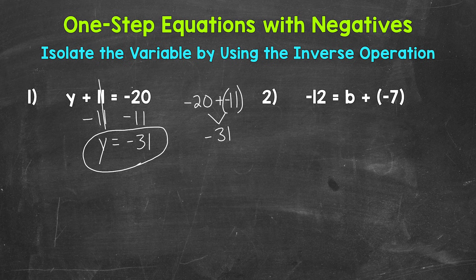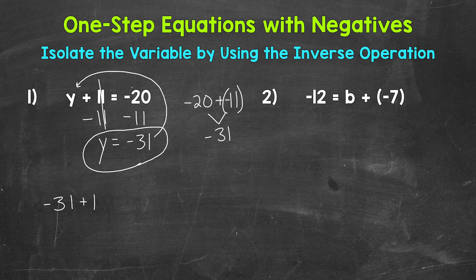We can always check a solution by plugging it into the original equation. So let's plug negative 31 in for y. Negative 31 plus 11 equals negative 20 — we're starting at negative 31 and adding 11, increasing in value by 11. Negative 31 plus 11 does equal negative 20, so we have the correct solution: y equals negative 31.